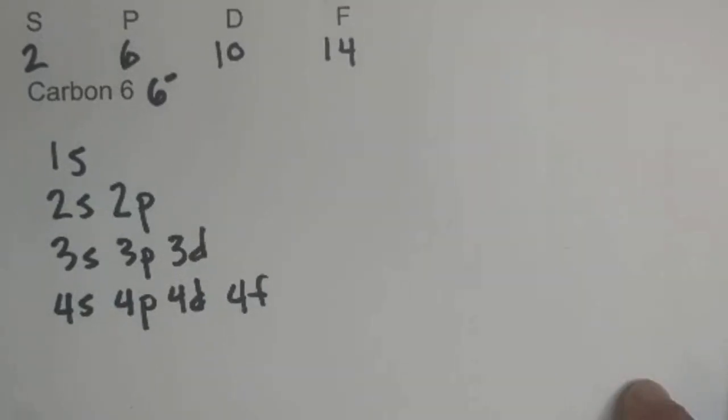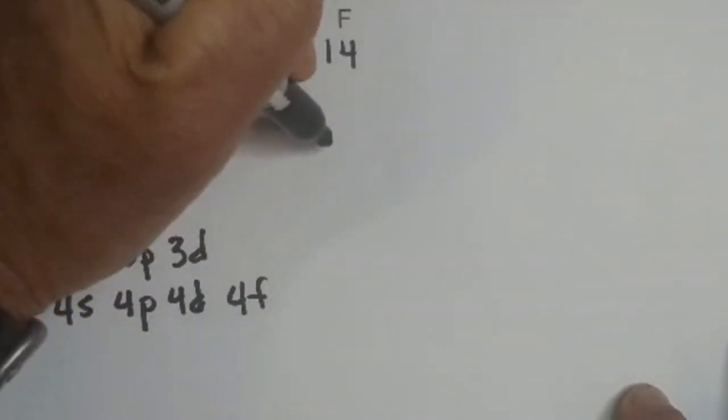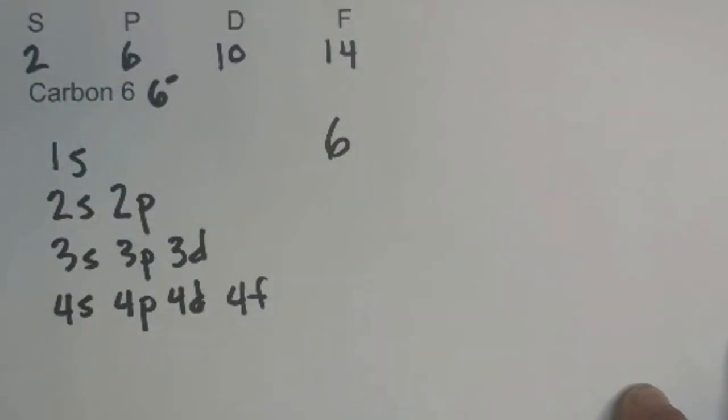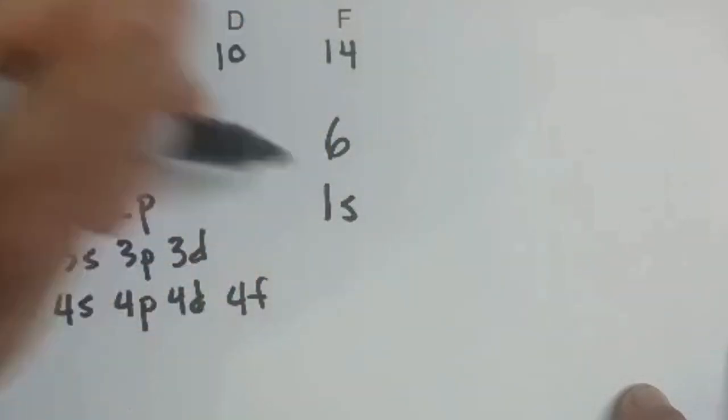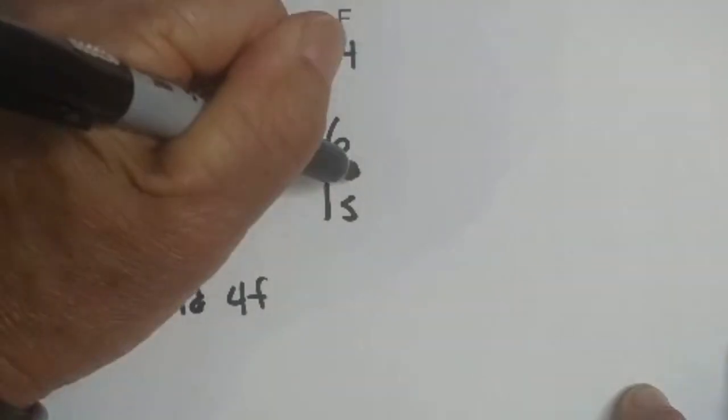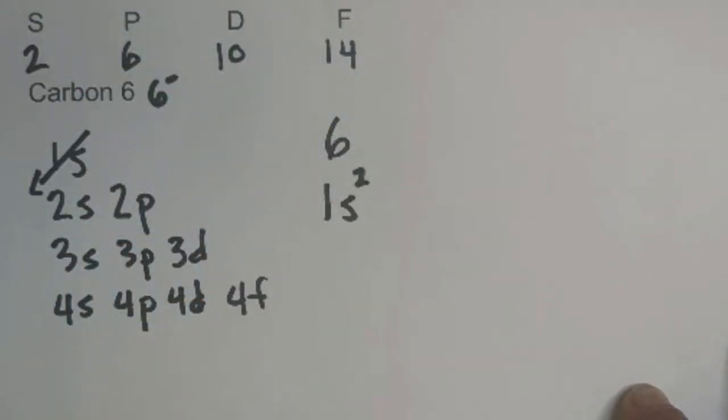So now let's get started with carbon. We have six electrons, so we're going to start here and draw an arrow in this direction. We're going to have 1s, and remember s can hold up to 2, so it's going to be 1s².